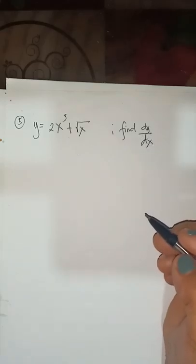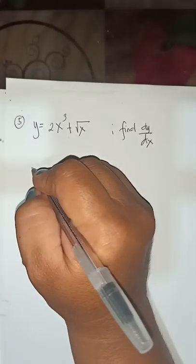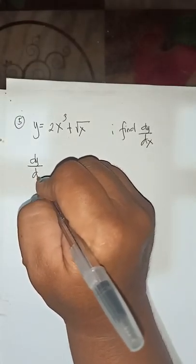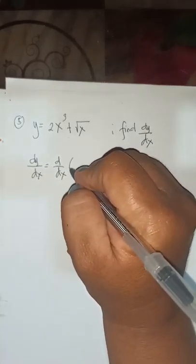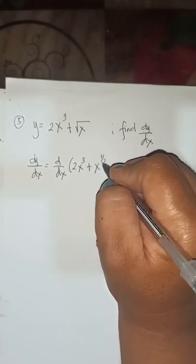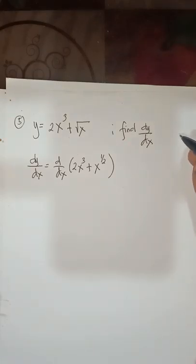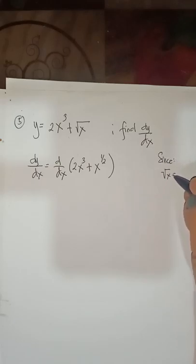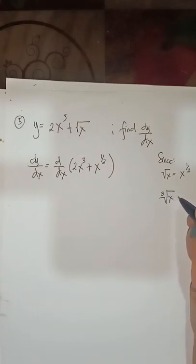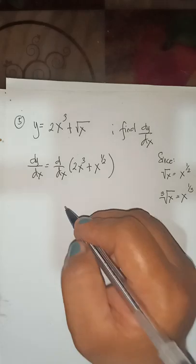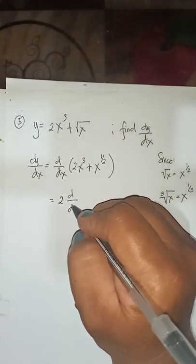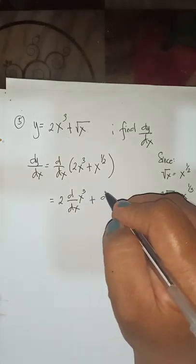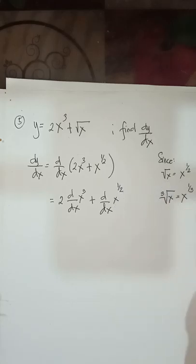dy/dx equals d/dx of 2x cubed plus x raised to 1 half. Since the square root of x is equivalent to x raised to 1 half. Similarly, the cube root of x would be equivalent to x raised to 1 third.